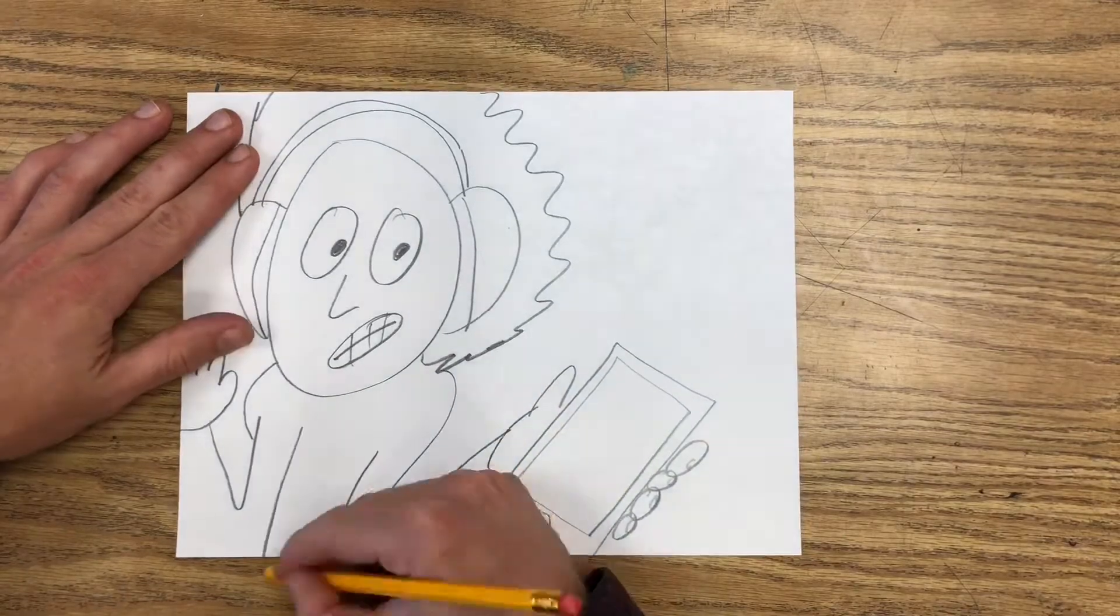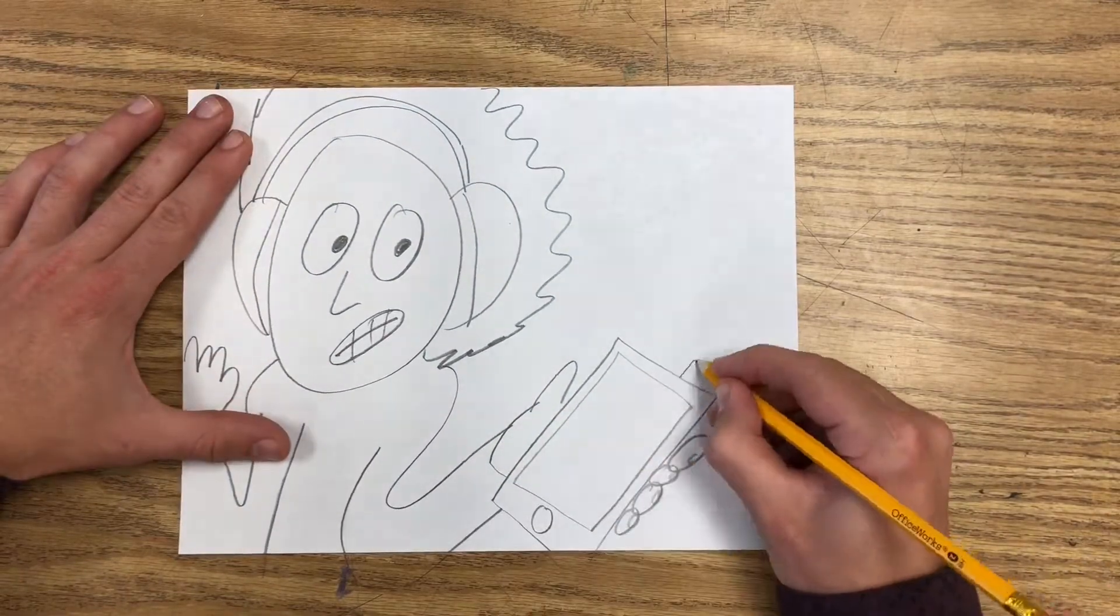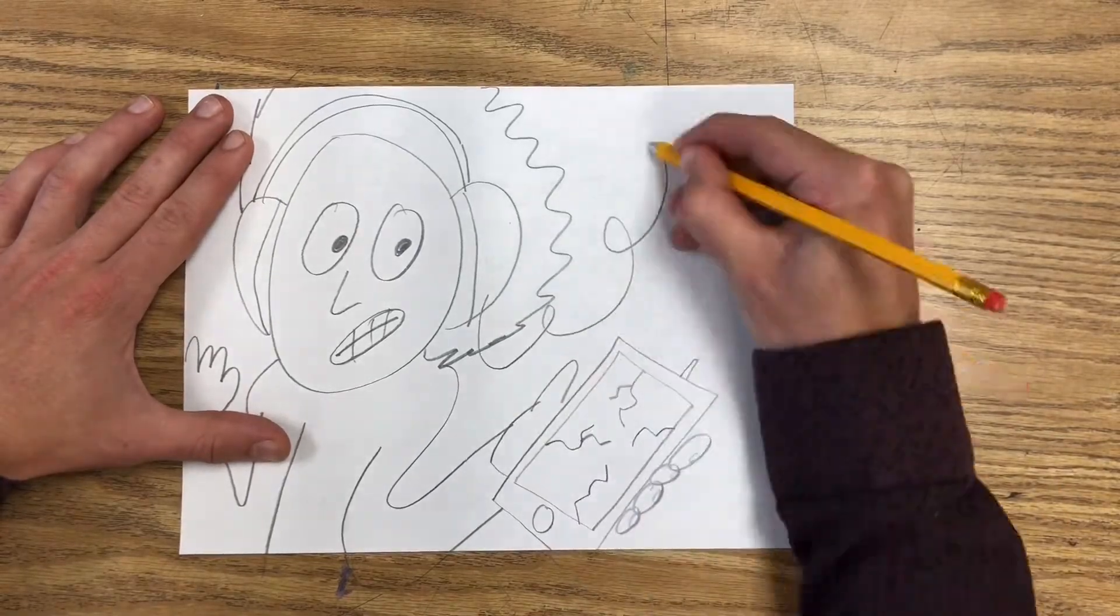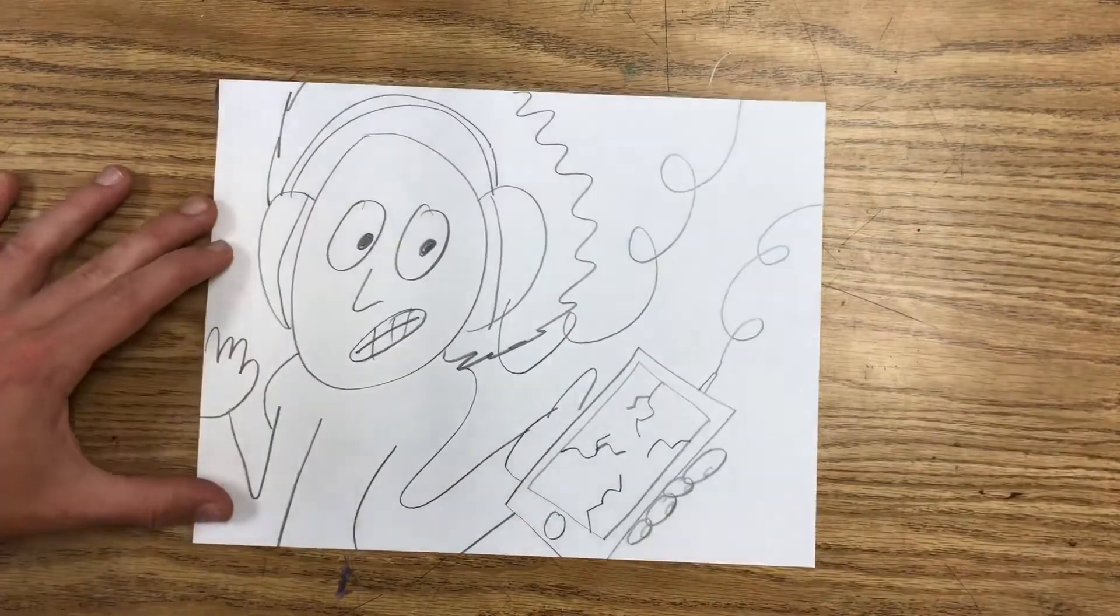When you draw your subjects big, they're eye catching and you have plenty of room for cool details like a cracked screen on that phone and a curly cord.